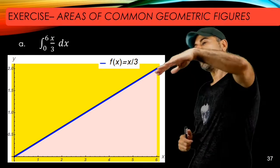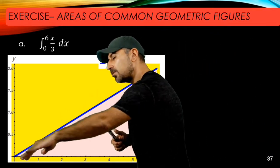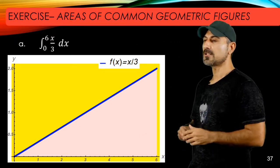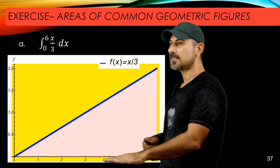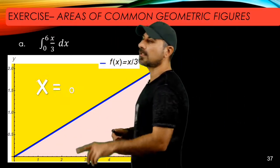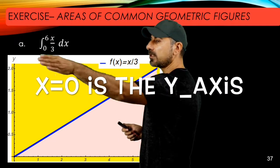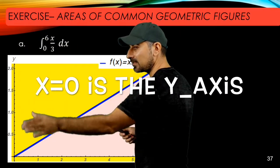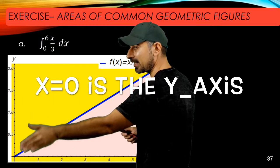If you are talking about f(x) equals x over three, you have the equation of a line. That is the blue line representing the function, and here is the x-axis. The lower limit is x equals zero. X equals zero is the y-axis. In fact, that's the vertical line, the y-axis.